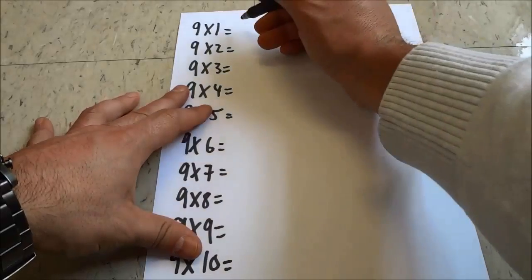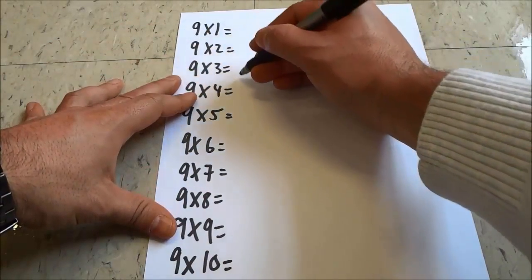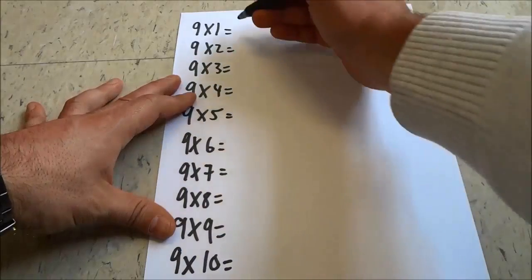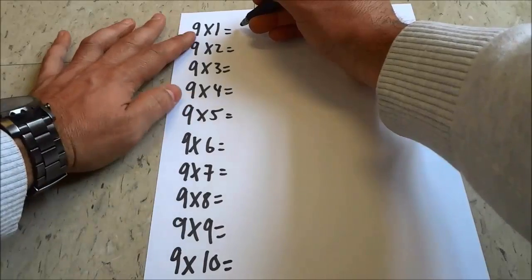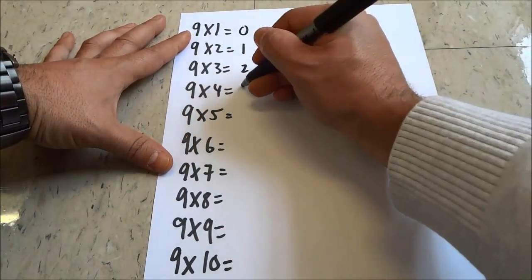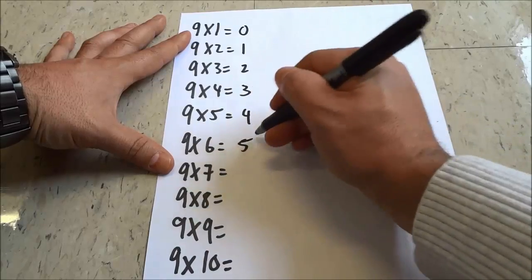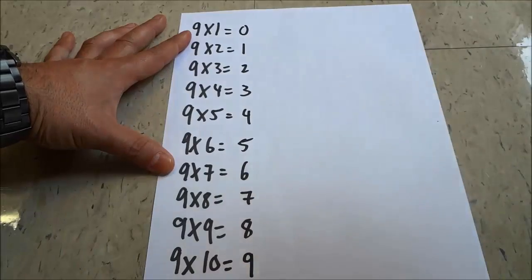Basically you're going to start at the top over here at the nine times one and you're going to just go down and write the first digit for each of the answers. So you're just going to start with zero, then one, two, three, four, five, six, seven, eight, nine, just like that.